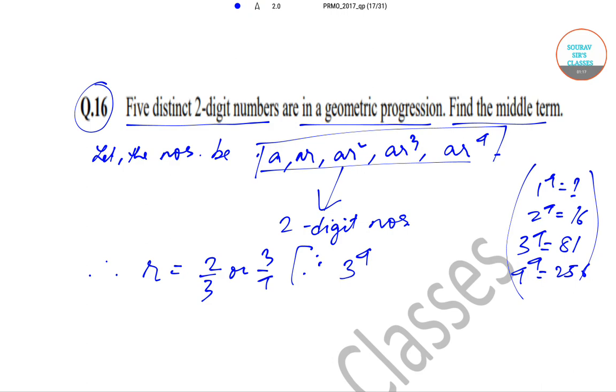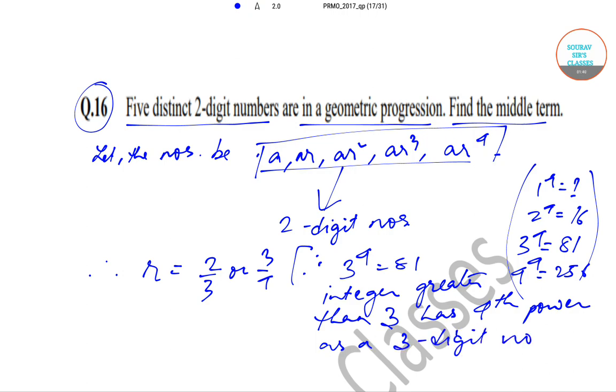Since 3 to the power 4 is 81, therefore any integer greater than 3 has fourth power as a three-digit number. But we want two-digit numbers, so r will be equal to 2/3 or 3/2.